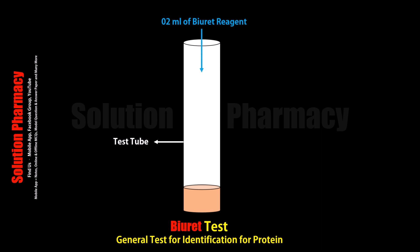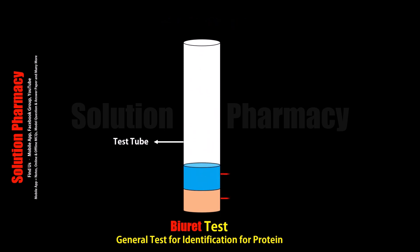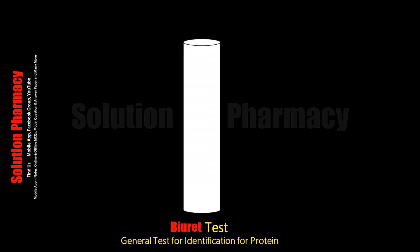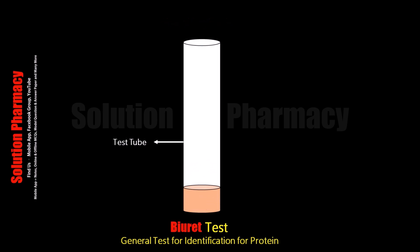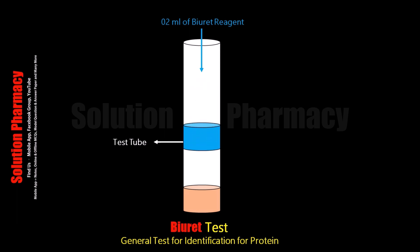So, let's know how Barrett test is performed. First of all, take a clean and dry test tube and then add 2 ml of the test solution, in which we have to detect the presence of protein. Then add 2 ml of the Barrett reagent with the help of a pipette.